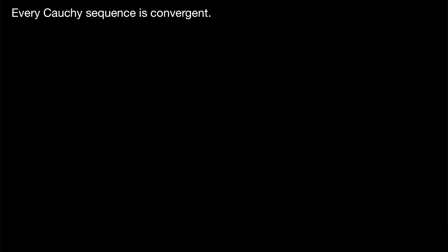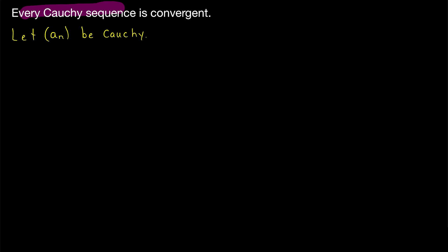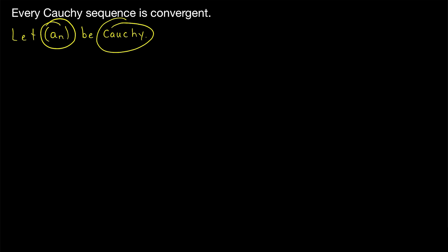We need to start with an arbitrary Cauchy sequence and then prove it converges. So we'll say that AN is a Cauchy sequence. One of the reasons we started investigating Cauchy sequences is that we were looking for a way to prove that a sequence converges without knowing its limit. This is the key tool in being able to do that — we could just prove a sequence is Cauchy and then conclude it's convergent by this theorem. But at this point we don't know that's true, which means we need to know what the limit of this arbitrary Cauchy sequence is.